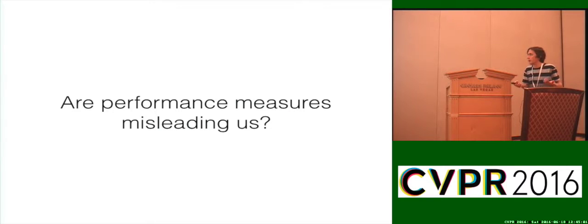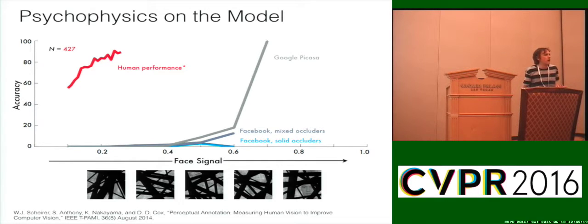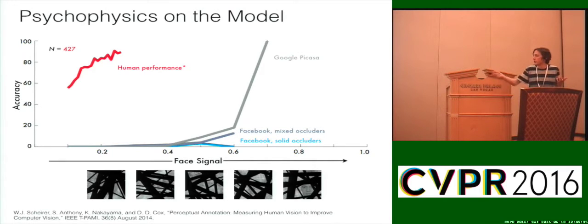A big question we can ask is: are performance measures really misleading us? Do we think this is not a problem because the measures we use are typically tuned for closed-set classification as opposed to open-set recognition? Psychophysics, commonly deployed in psychology and neuroscience to understand perceptual thresholds, turns out to be very useful for artificial intelligence as well. We can take any arbitrary model and start performing a highly controlled experiment where we manipulate some condition like lighting, resolution, pose, or occlusion.